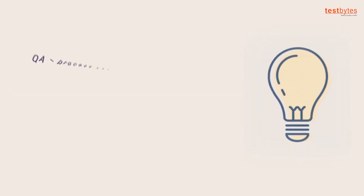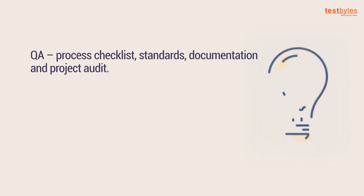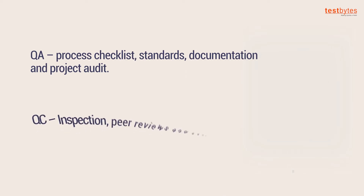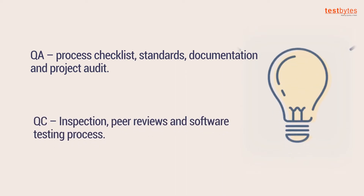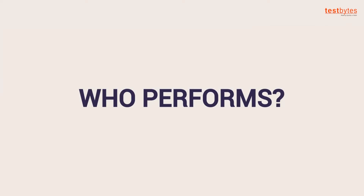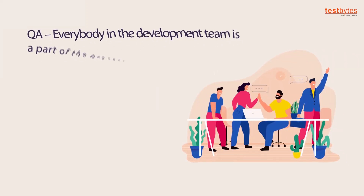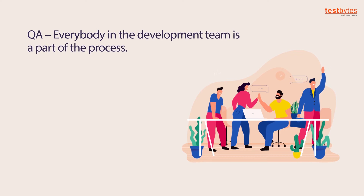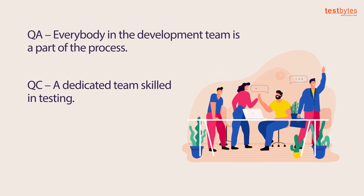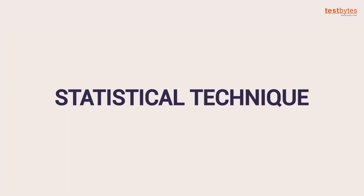Examples of QA processes include checklists, standards documentation, and project audits. QC examples include inspection, peer reviews, and the software testing process. In terms of resources, QA involves everybody in the development team, while QC requires a dedicated team skilled in testing.